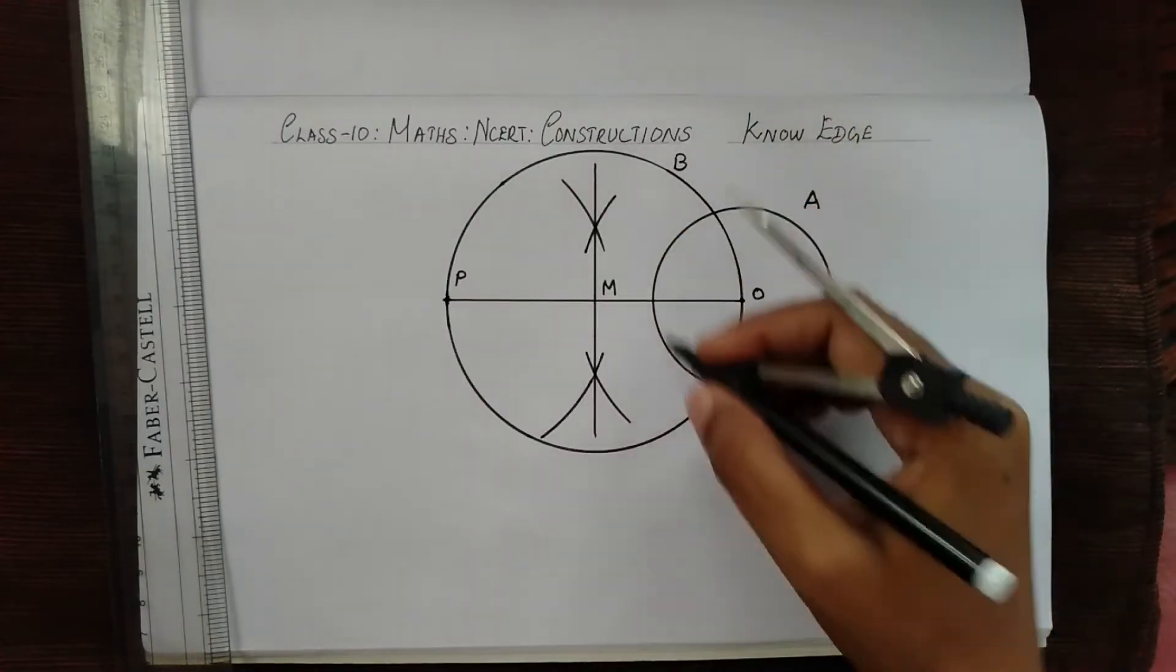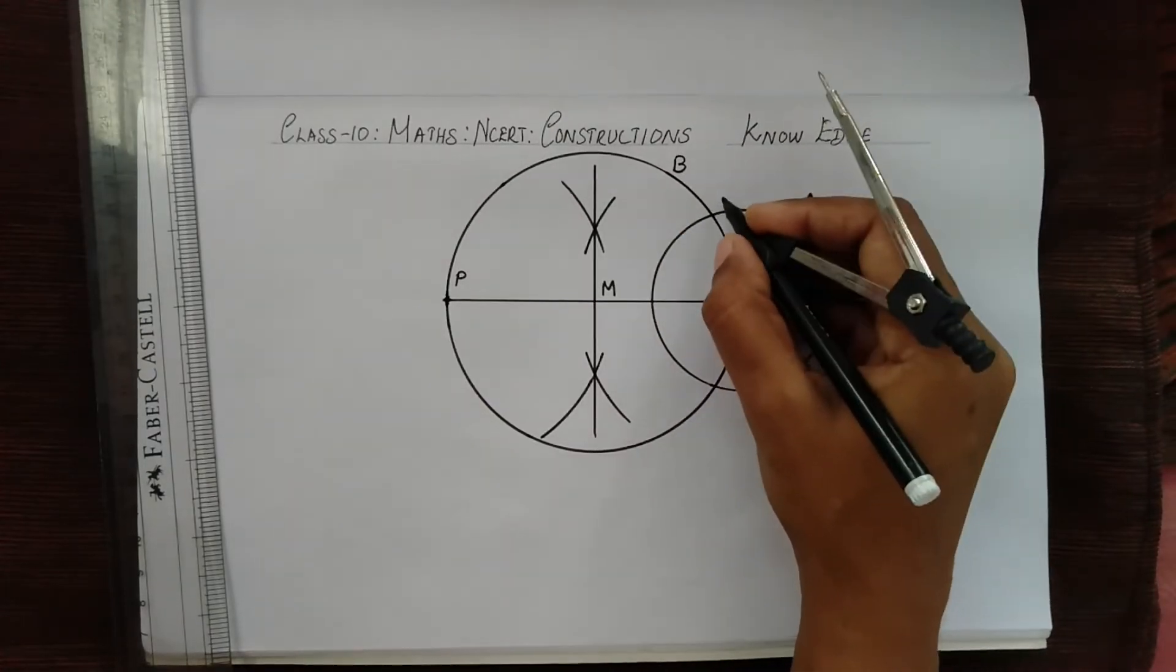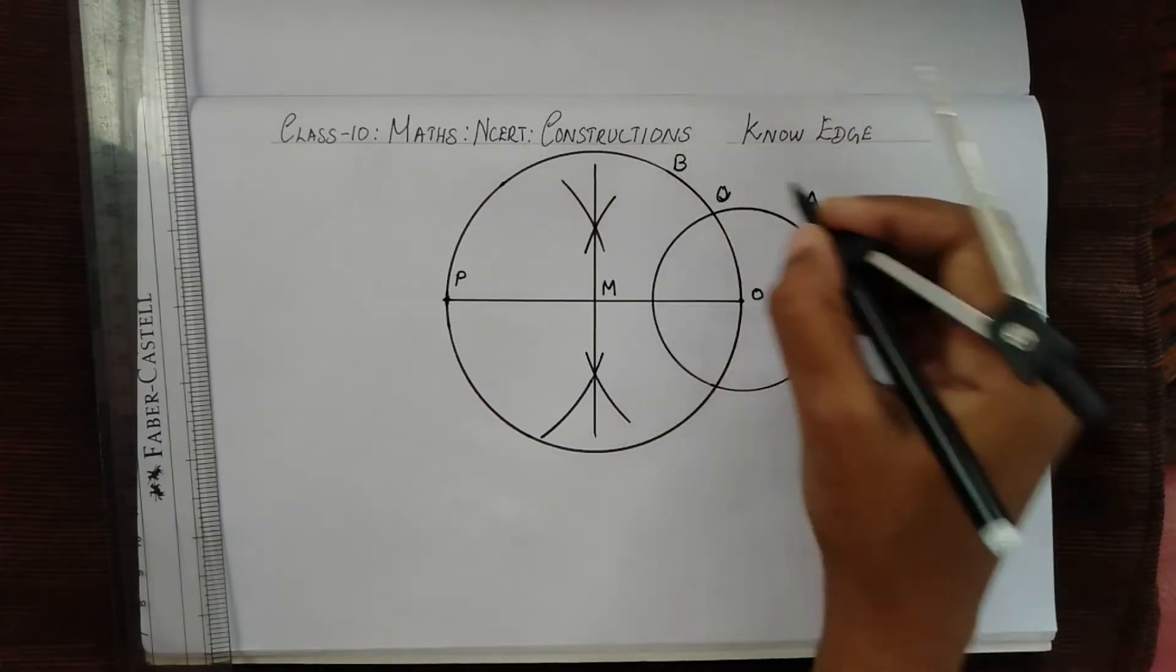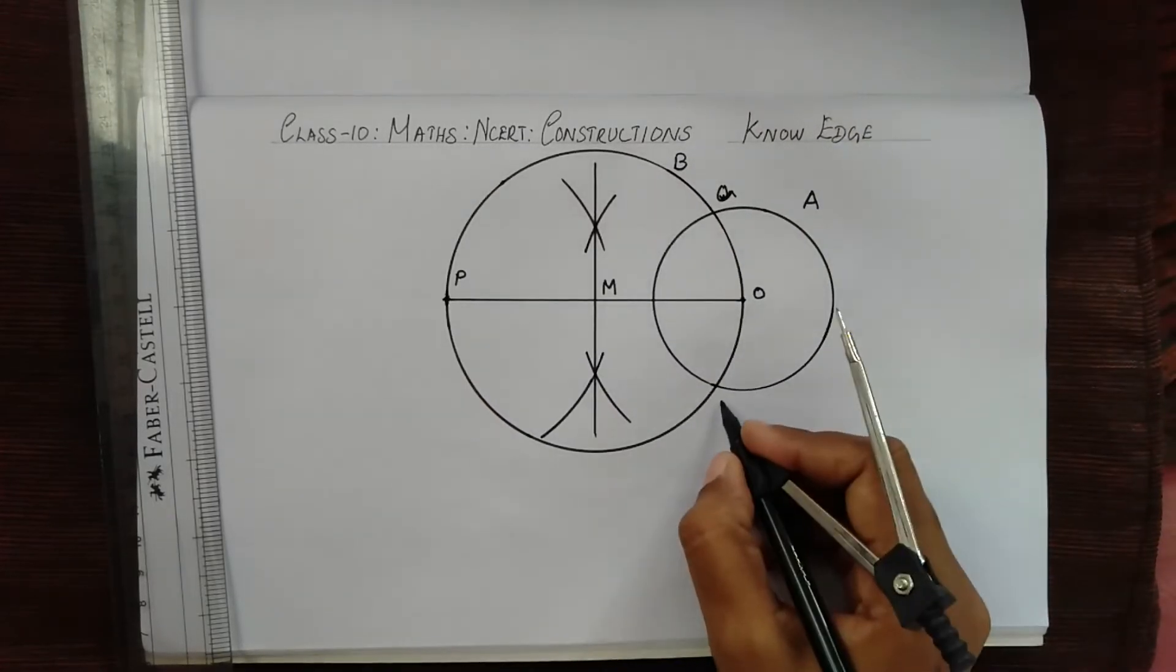Let's name this intersection point as Q and this intersection point as R.